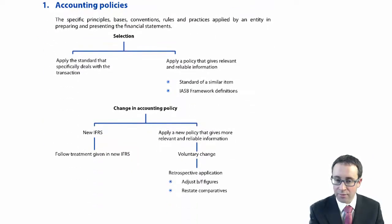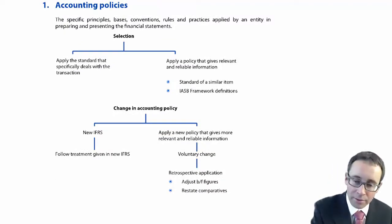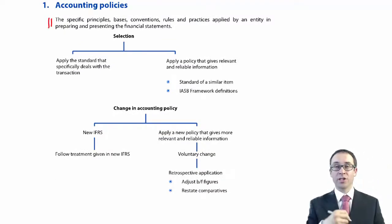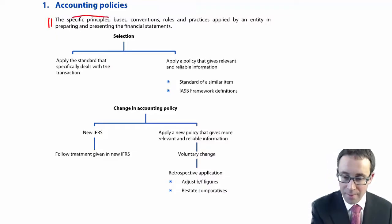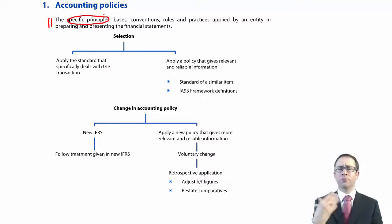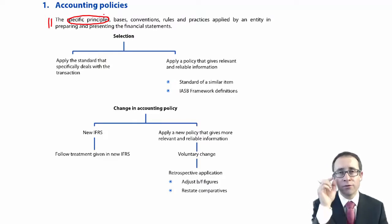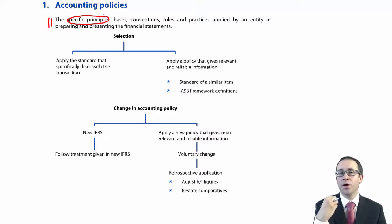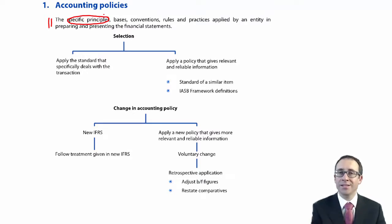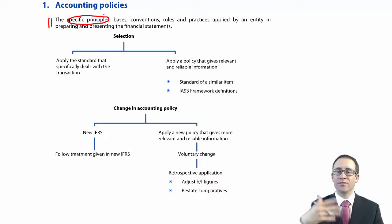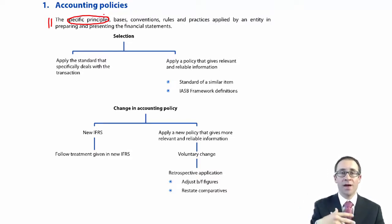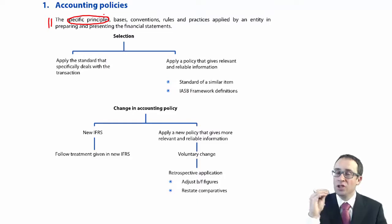First of all, IAS 8 gives you a definition of what an accounting policy is. It talks about the specific principles — that's the main bit to think about. Remember, everything is underpinned by the conceptual framework, which gives you the general principles regarding the underlying assumptions, the fundamental qualitative characteristics, the enhancing qualitative characteristics, and the definitions of assets, liabilities, income, expense, and equity — and how we recognise them as probable and measurable reliably. IAS 8 is being more specific.